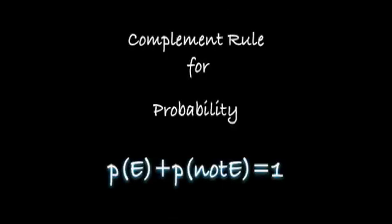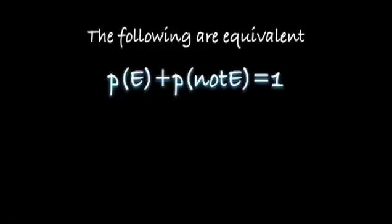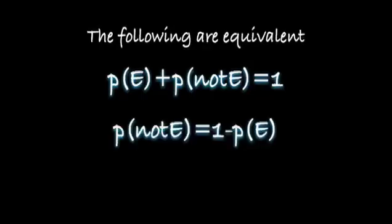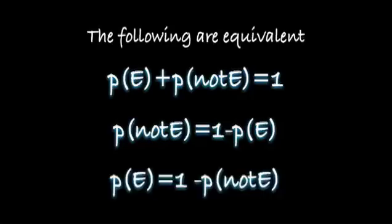This is known as the complement rule for probability. P of E plus P of not E is equal to 1. The following equations are equivalent. The complement rule for probability. P of not E equals 1 minus P of E. This is deduced by simply subtracting P of E from both sides using algebra. On the left, the P of E cancels. On the right, it doesn't. This is an equivalent equation. The probability of E equals 1 minus the probability of the complement of E. This is found by subtracting the probability of the complement of E from both sides. These three equations are equivalent, and we will be used in the future.